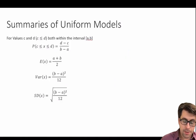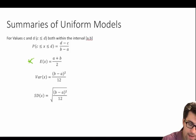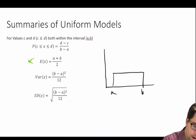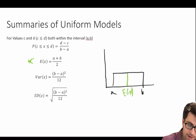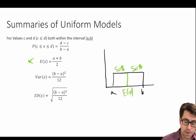Let's talk about the summary formulas for the uniform model. The expected value is simply equal to a plus b divided by two — exactly halfway between a and b — so 50% of observations fall above and 50% fall below the expected value. The variance is equal to (b minus a) squared divided by 12, and the standard deviation is the square root of (b minus a) squared divided by 12.